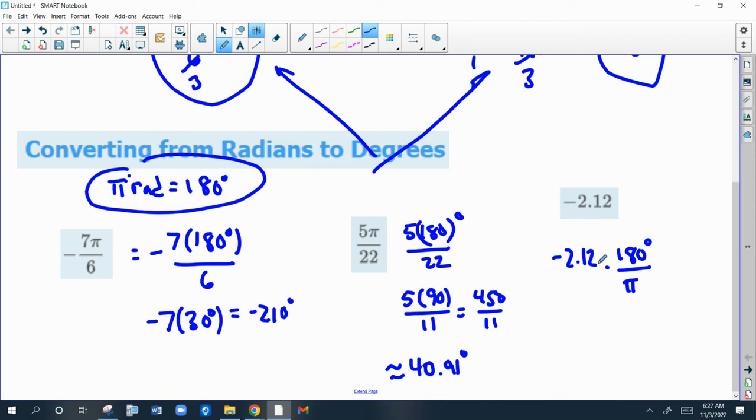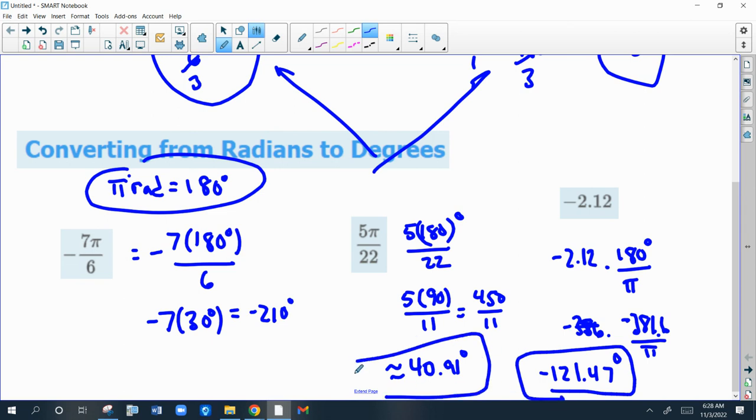And this is pi radians, negative 2.12 radians. It'll cancel, so this is perfect. I'm going to do all this on my calculator. I'm just going to multiply negative 2.12 times 180, and I get negative 381.6 over pi. So I'll divide by pi on my calculator, and my final answer is negative 121.47 degrees. That's approximate, just like the one before, because I rounded. So that's how you convert from degrees to radians and vice versa.